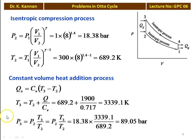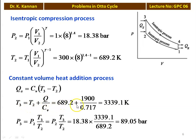For the constant volume heat addition process, Qs equals Cv × (T3 - T2). From this expression, T3 equals T2 + Q/Cv equals 689.2 plus 1900/0.717.